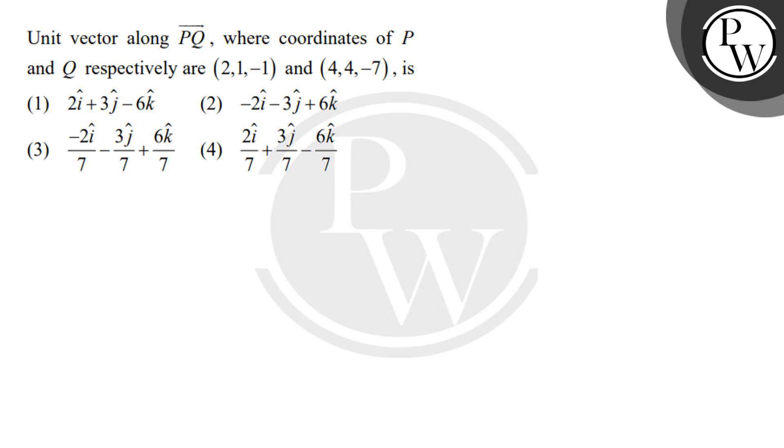Hello students, so let's read this question. The question is: unit vector along PQ vector, where coordinates of P and Q respectively are (2, 1, -1) and (4, 4, -7), is which of the following option?